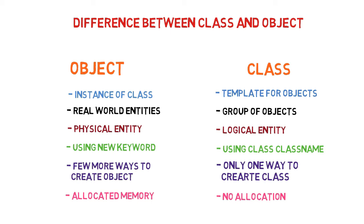Let's revise the differences once. A class is a template and an object is an instance of it. An object is a real-world entity and a class is a group of similar objects. An object is a physical entity and a class is a logical entity. An object can be created using the new keyword, while classes are created using the keyword class followed by the class name. There are various other ways to create objects, but only one way to create a class. When an object is created it gets memory, but this does not happen with the class.